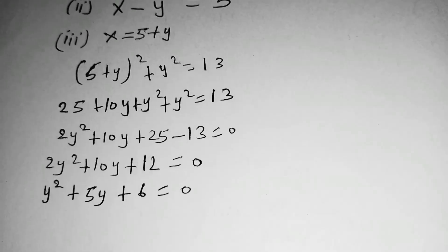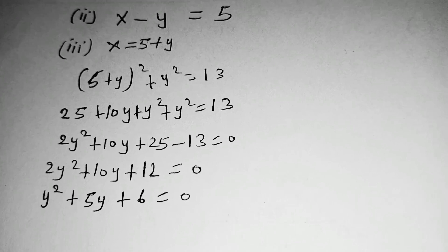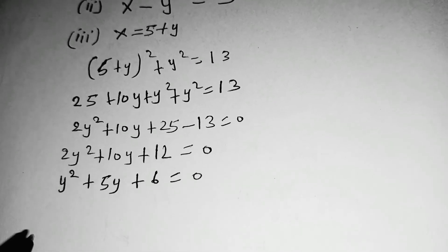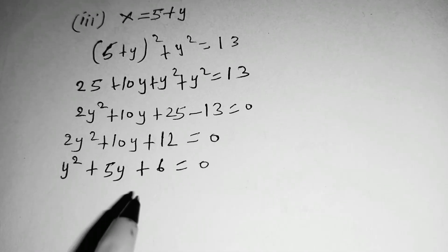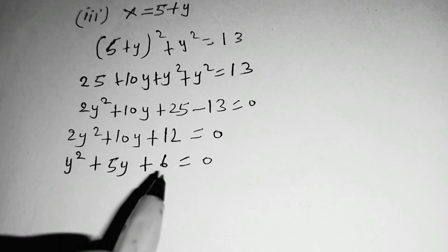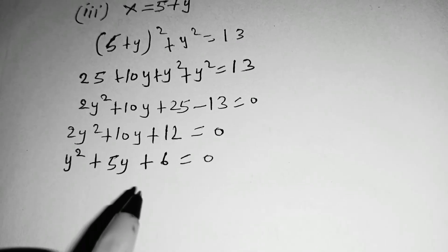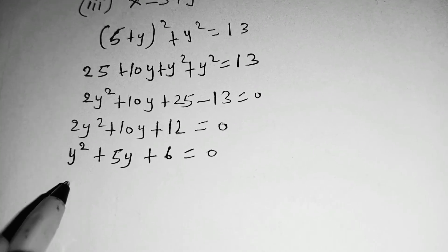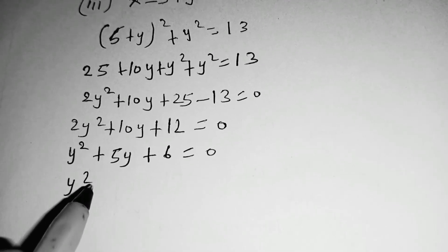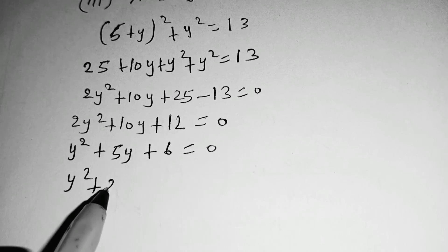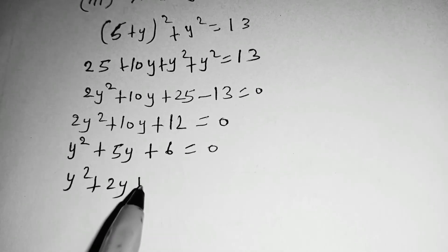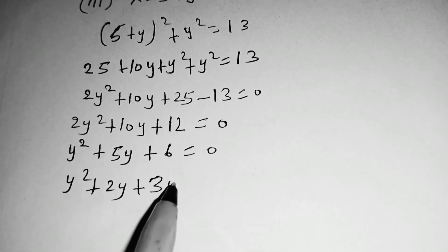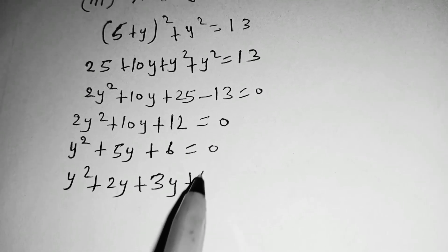So you ask yourself, what are the two numbers which when you multiply you obtain 6, and when you add you obtain 5. So it is 3 and 2, so we write y squared plus 2y plus 3y plus 6, this is equal to 0.